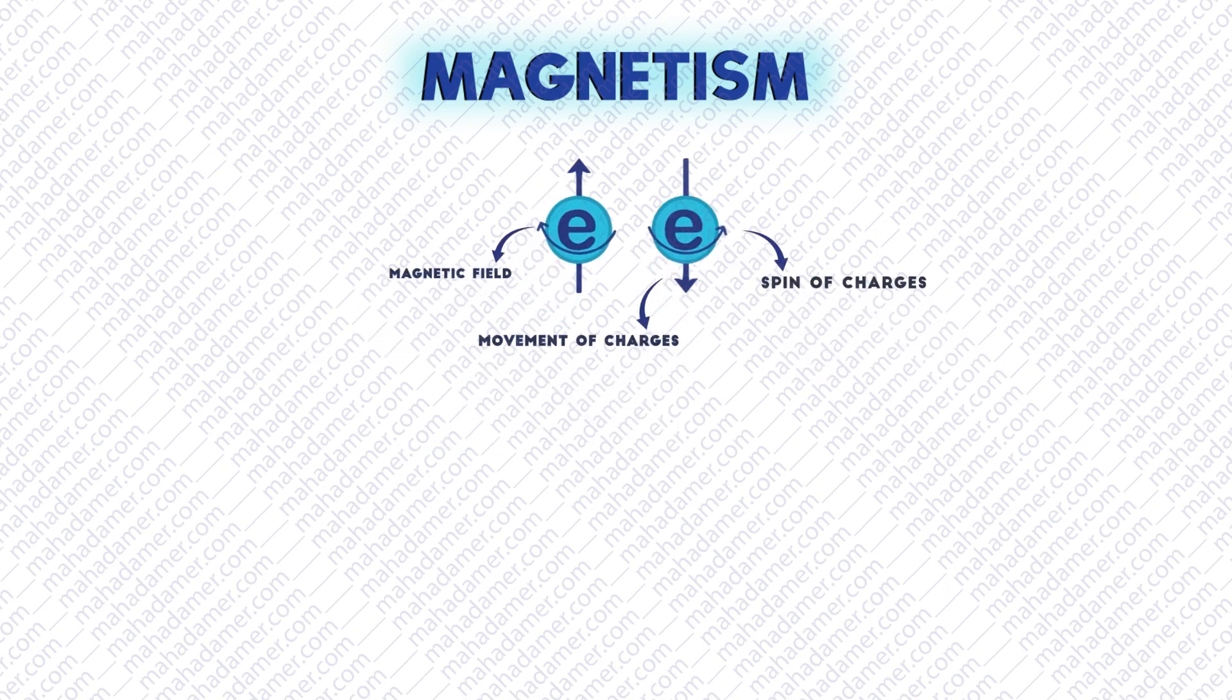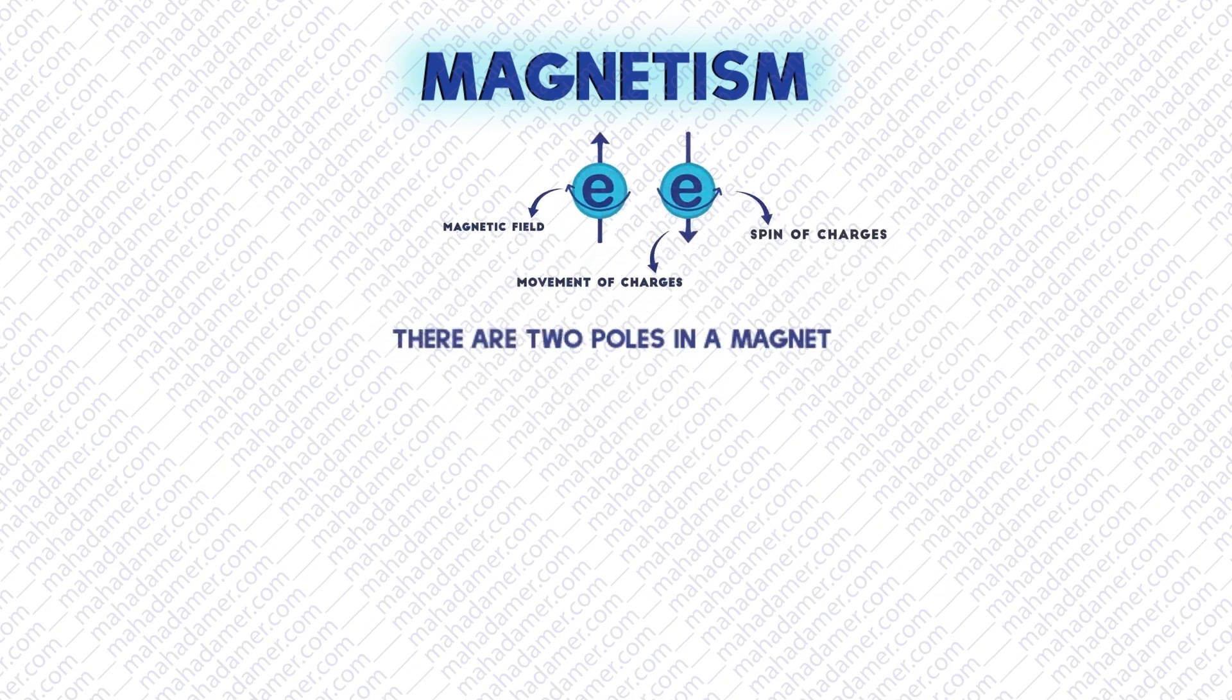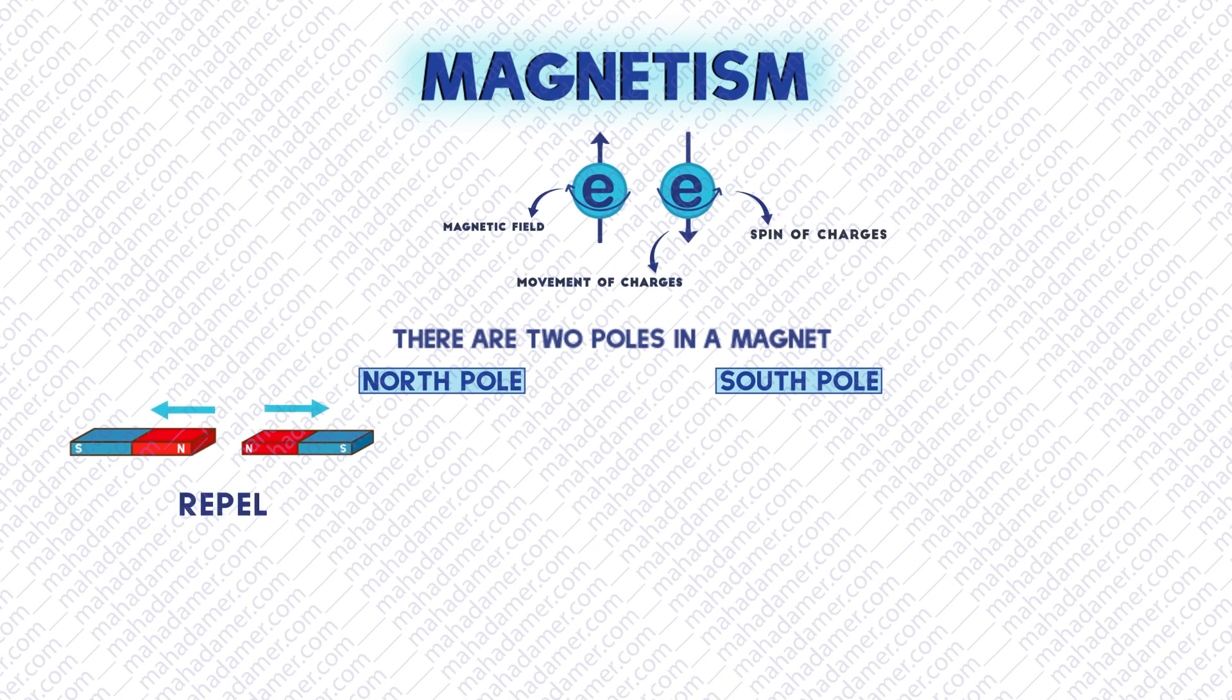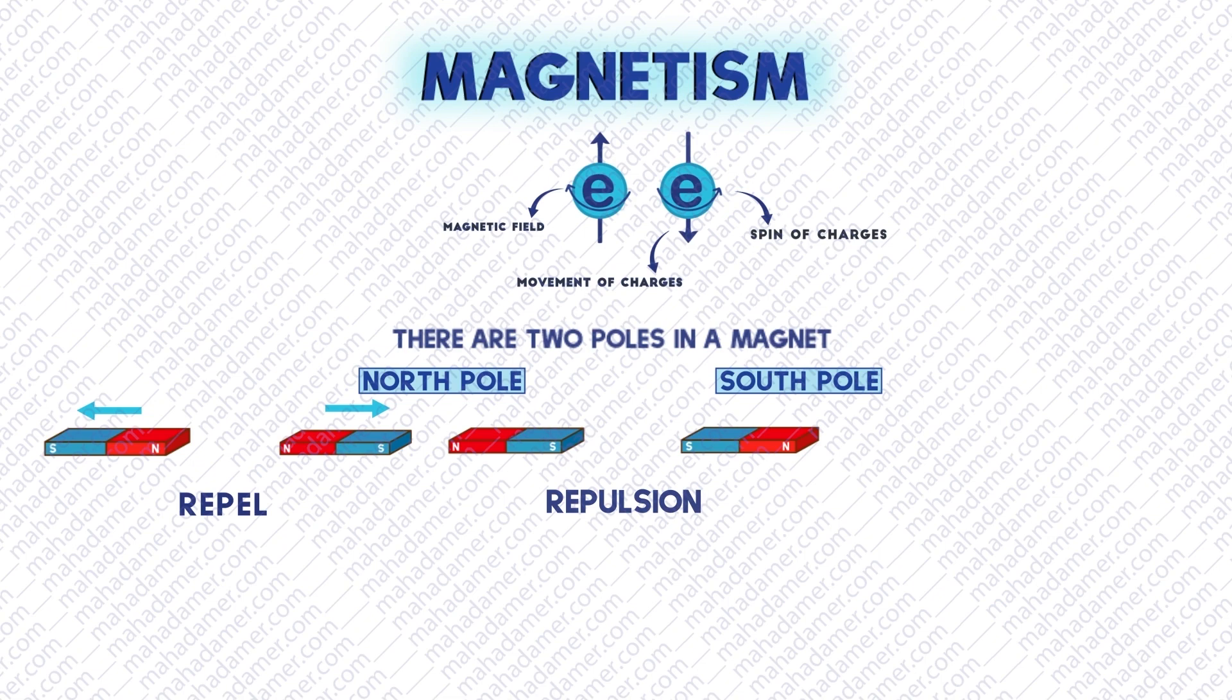There are two poles in a magnet, a north pole and a south pole. Like poles always repel each other. For example, if I bring two south poles together, they will experience repulsion. And unlike poles always attract one another. If I bring north and south together, they will attract each other.